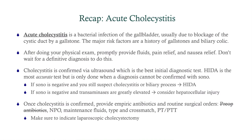To recap: cholecystitis is a bacterial infection of the gallbladder, usually due to blockage; the major risk factors are gallstones and biliary colic. Treat the patient first — we don't just treat diseases. Cholecystitis is confirmed by ultrasound as the best initial diagnostic test; the most accurate test is HIDA. If the ultrasound is negative but you still suspect cholecystitis, proceed to HIDA. If the ultrasound is negative and transaminases are greatly elevated, consider hepatocellular injury and check hepatitis titers. Once confirmed, complete surgical orders: NPO, maintenance fluids, type and cross match, PT/PTT, consult general surgery, and order a laparoscopic cholecystectomy.